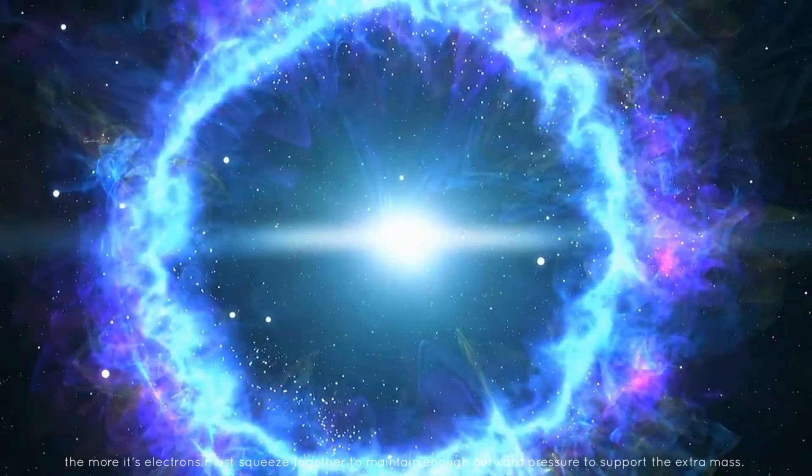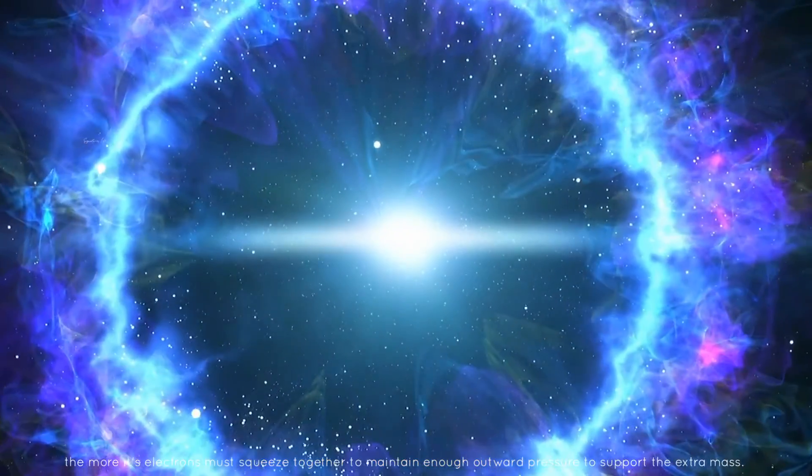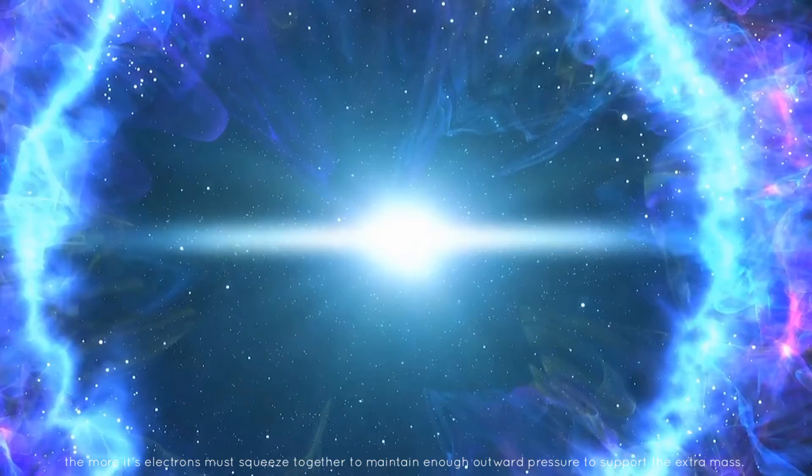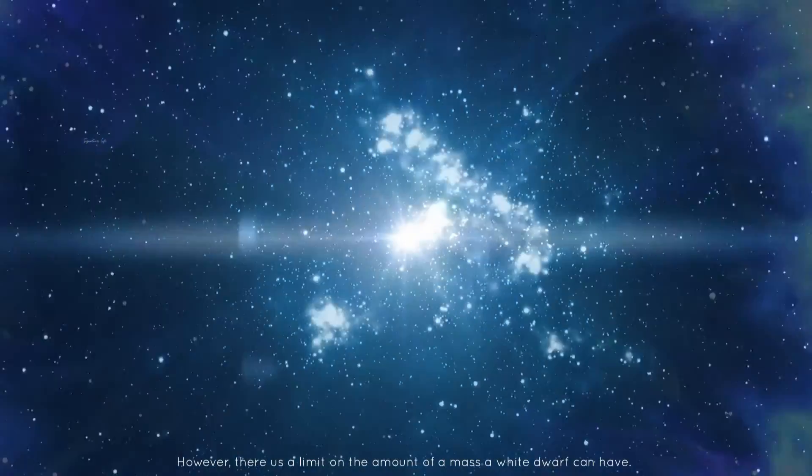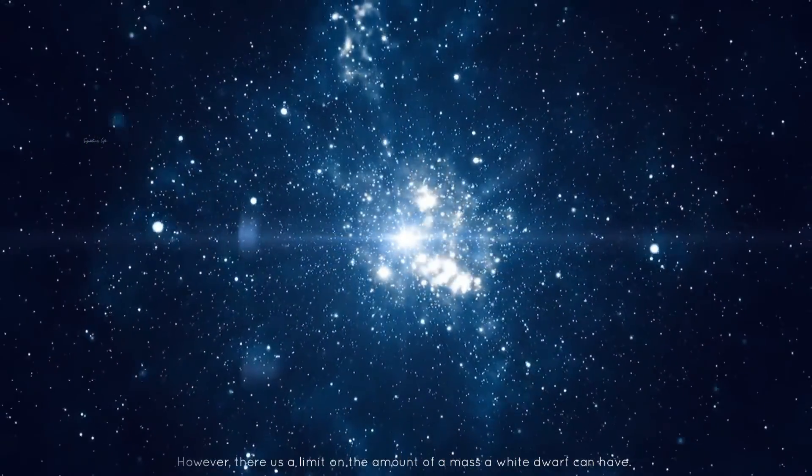This is because the more mass a white dwarf has, the more its electrons must squeeze together to maintain enough outward pressure to support the extra mass. However, there is a limit on the amount of mass a white dwarf can have.